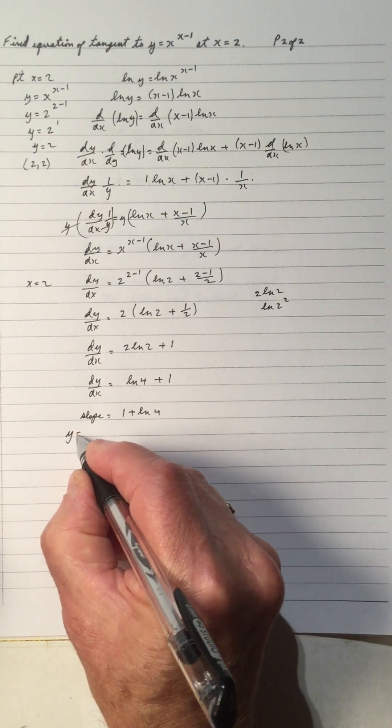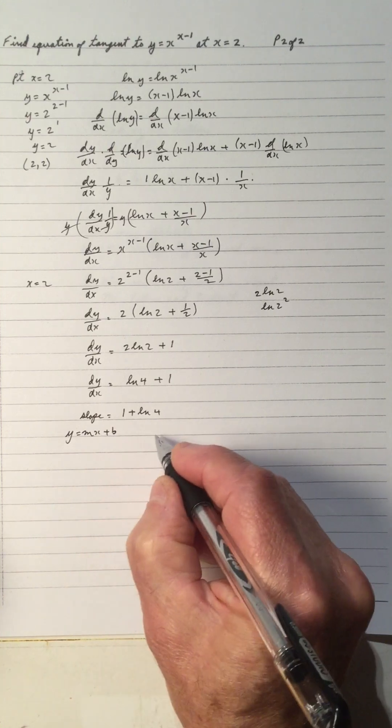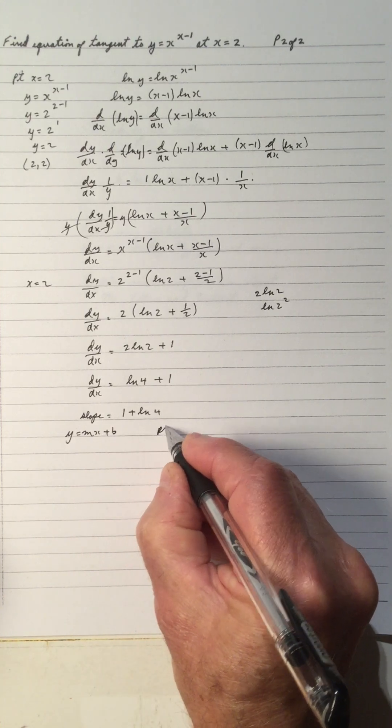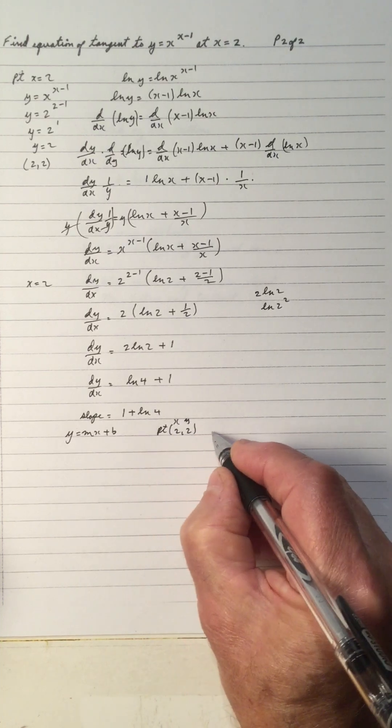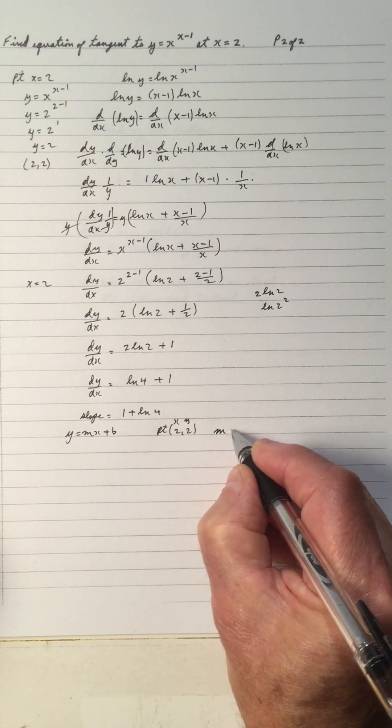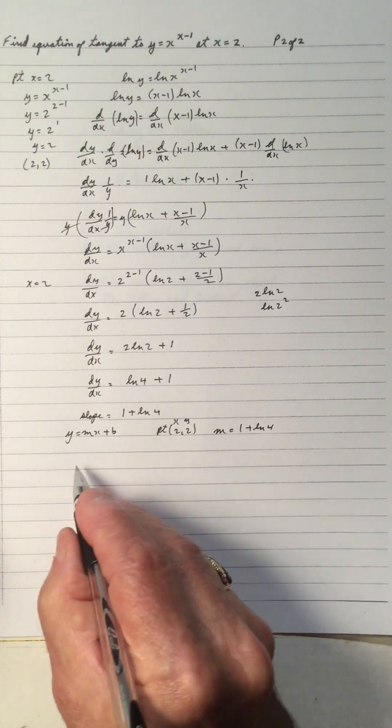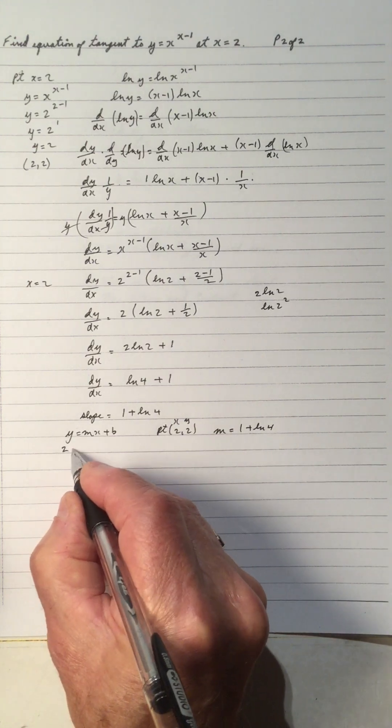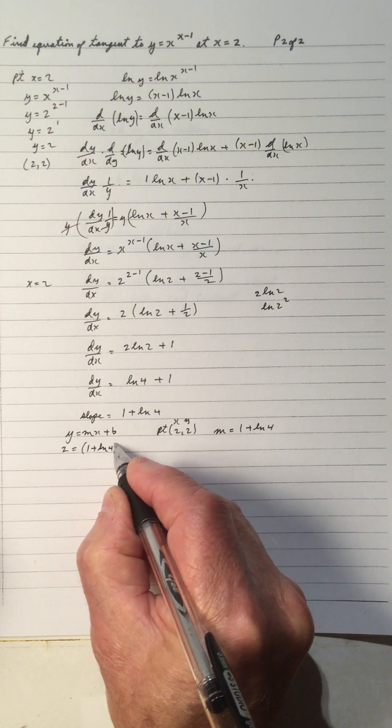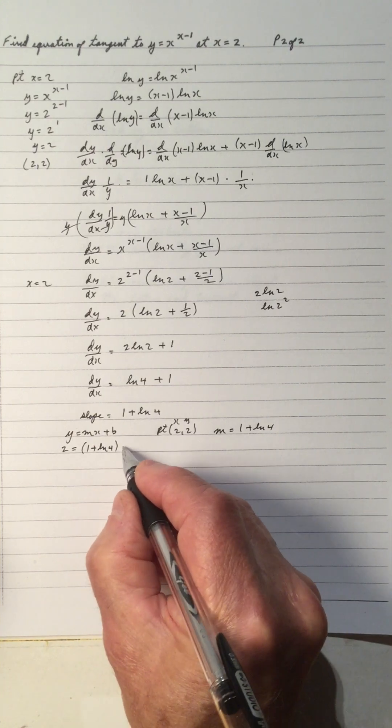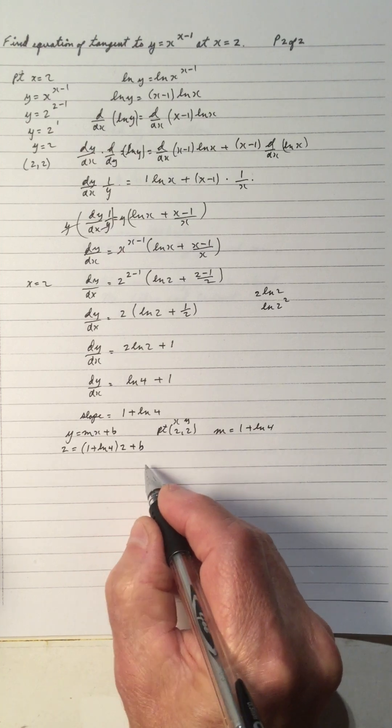So we have to find the equation of the tangent. So the equation is y equals mx plus b. So we have a point, which is 2, 2, which is x and y. And we have a slope, which is 1 plus ln 4. So y is 2, the slope is 1 plus ln 4.